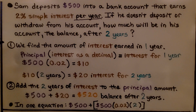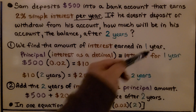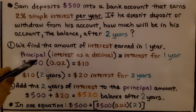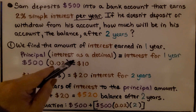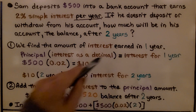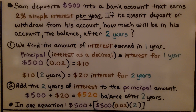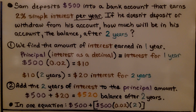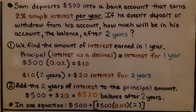First, we find the amount of interest earned in one year. The principal is $500 — that's how much he put in. We write the interest as a decimal and multiply it by the principal to get the interest for one year: $10. For two years, we multiply that $10 times 2 to get $20 interest. We add that $20 to the principal to get a $520 balance after two years.